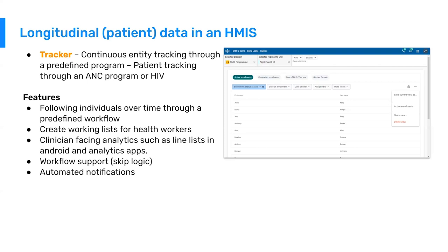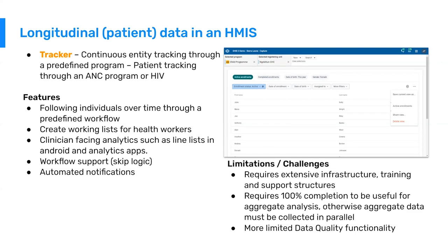There is also workflow support, just like with event data — skip logic, alerts, and notifications to aid the clinician or person entering data. There are many different kinds of automated notifications: notifications going to the individual health worker providing the service, notifications that could go to the actual patient, notifications going up to higher levels at any level in the hierarchy. In the case of an adverse event, if one is detected by DHIS-2 at the lowest level, an automated alert could be fired off to people at district or national rapid response teams for follow-up.